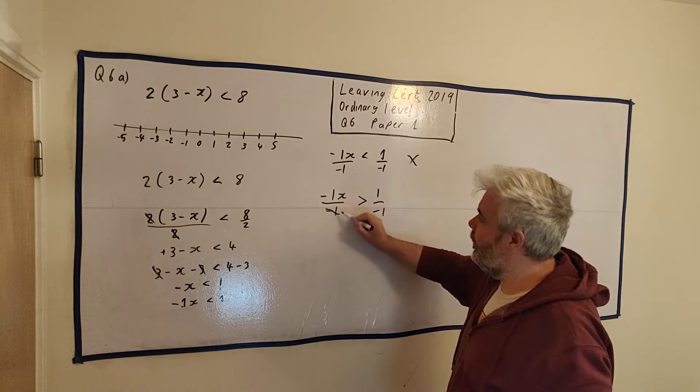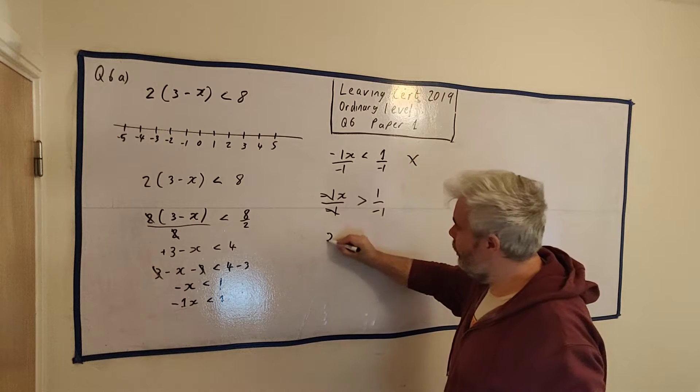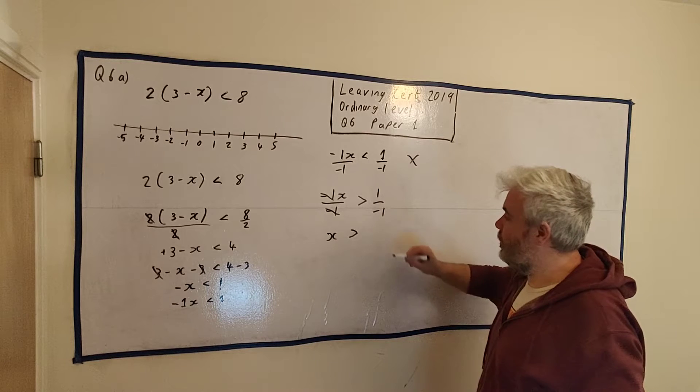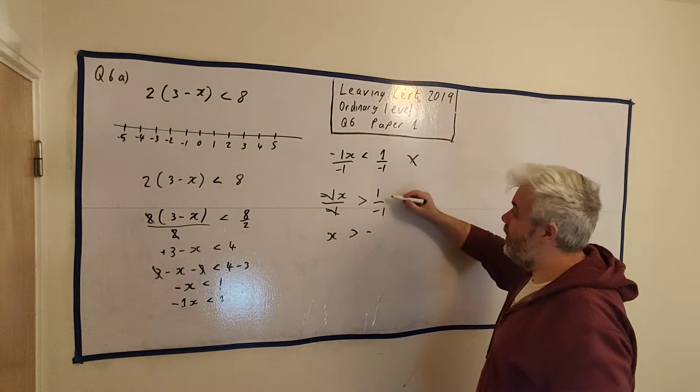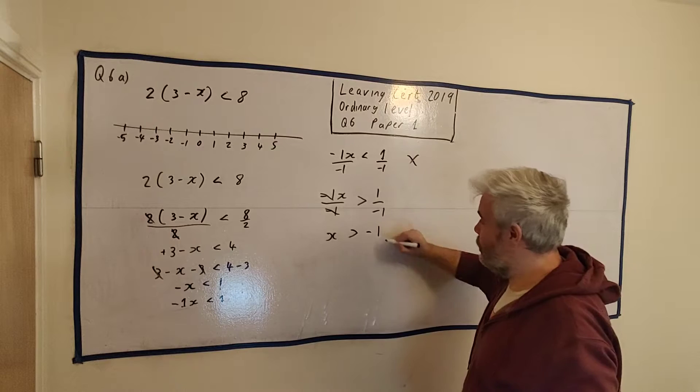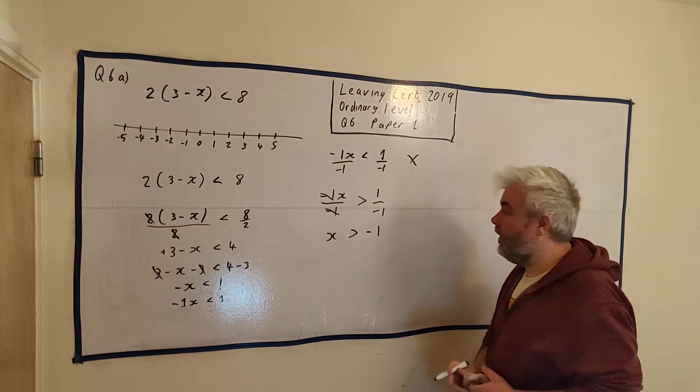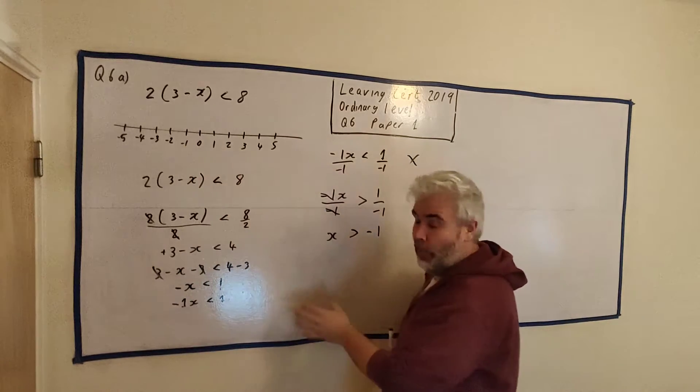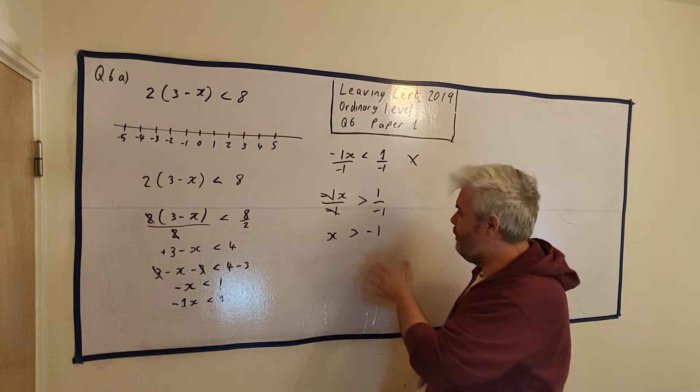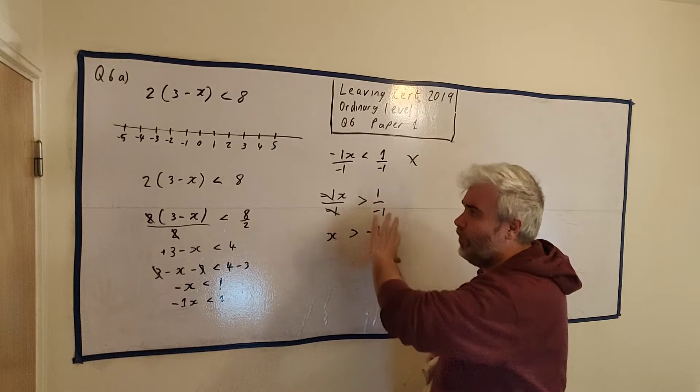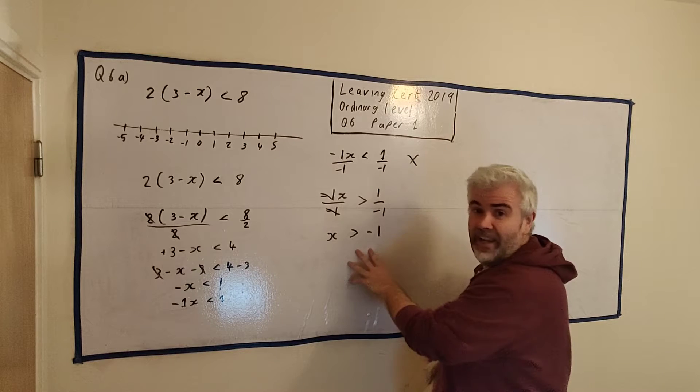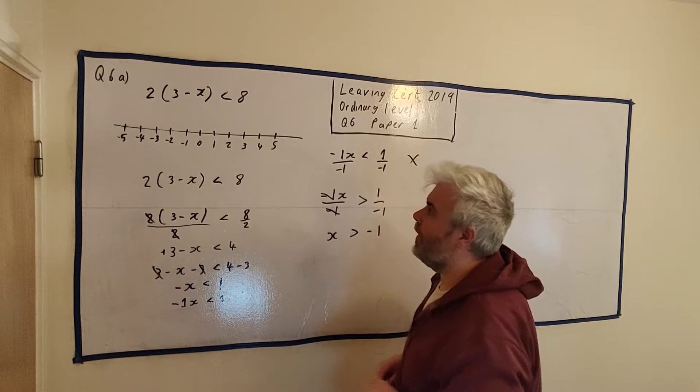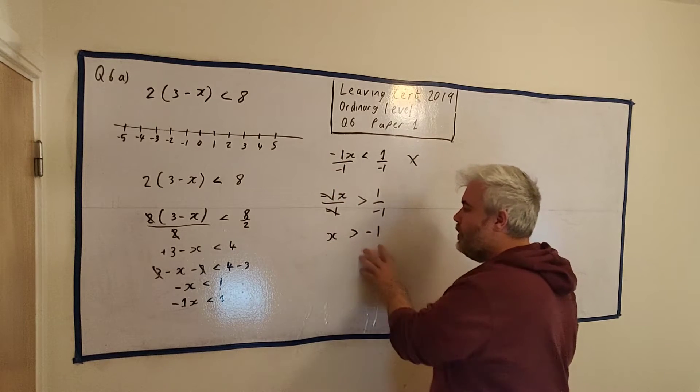So what do we get? -1 divided by -1 leaves just 1, 1x is greater than 1 divided by -1. A plus and a minus make a minus. 1 divided by 1 is just 1. So x is greater than -1. The last thing we need to do is put it into a number line. You will get most of your marks for this part A. There's still a couple of marks to get for drawing the answer in.